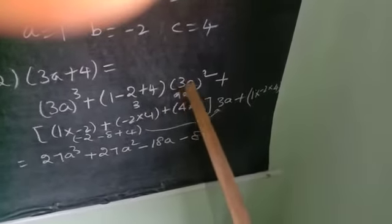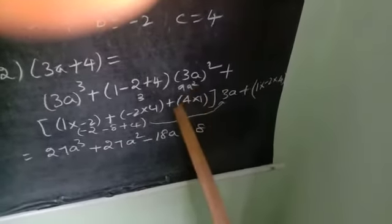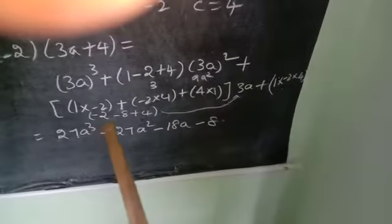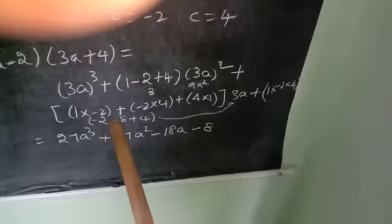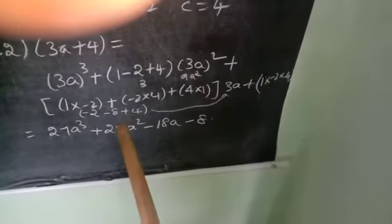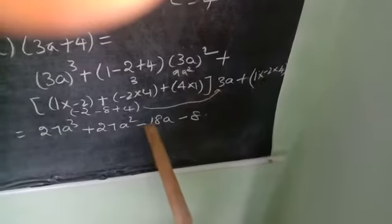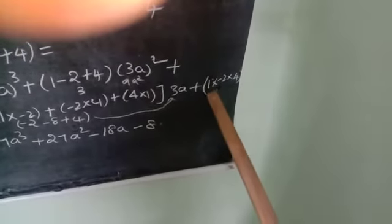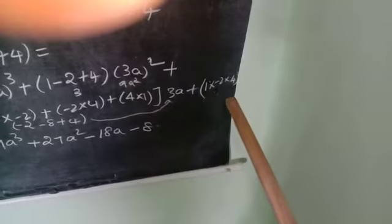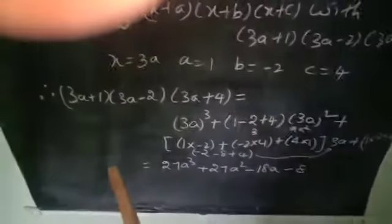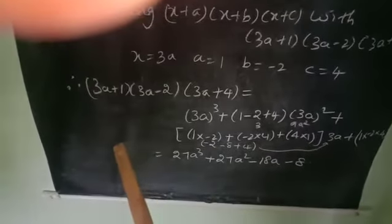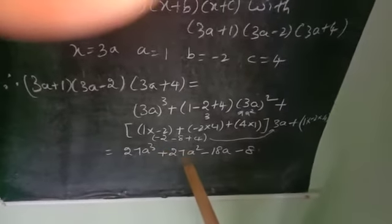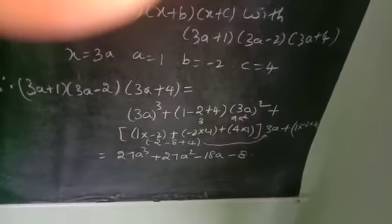For the middle term: minus 2 minus 8 plus 4 equals minus 6, so minus 6 into 3a gives minus 18a. The last term, abc, is 1 into minus 2 into 4 equals minus 8. Therefore, 3a plus 1 into 3a minus 2 into 3a plus 4 is equal to 27a cube plus 27a square minus 18a minus 8.